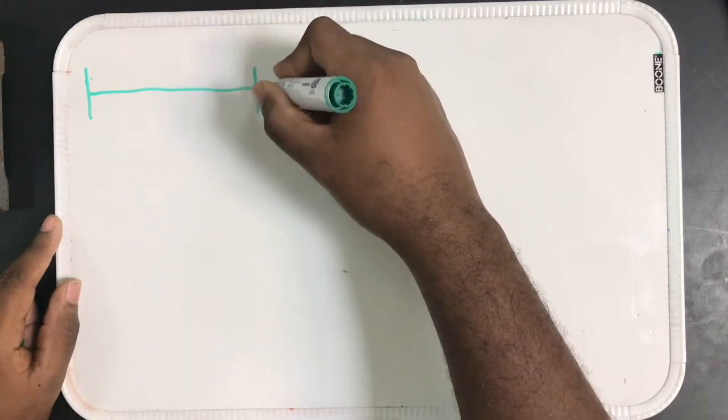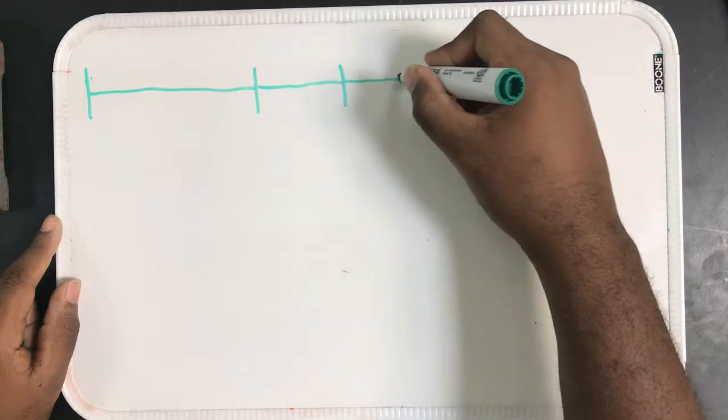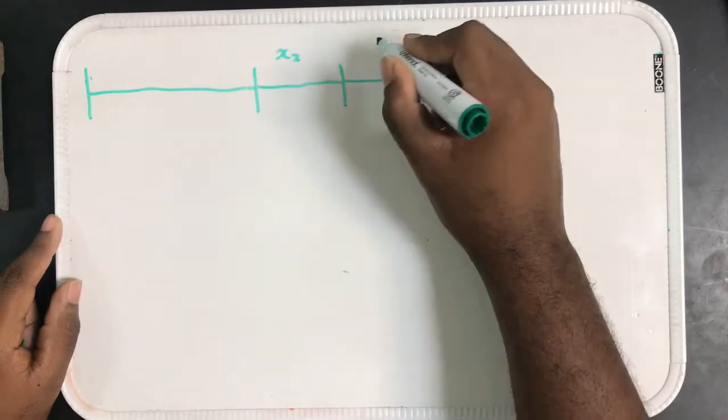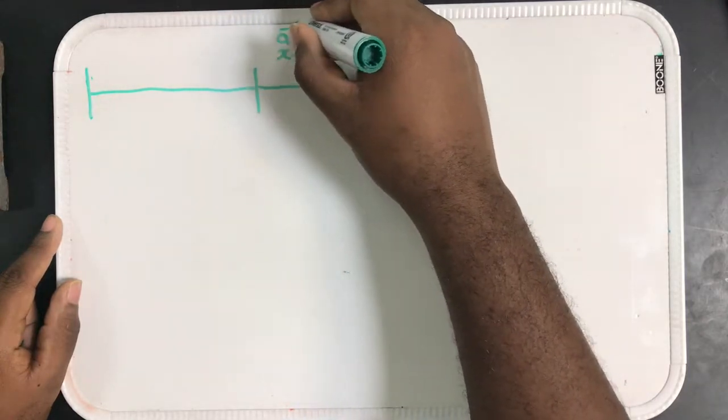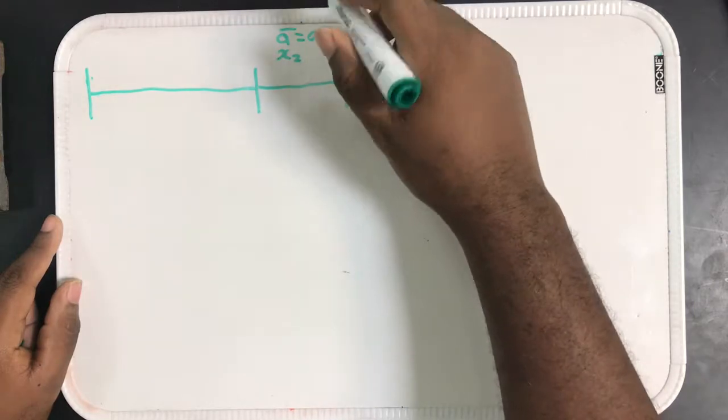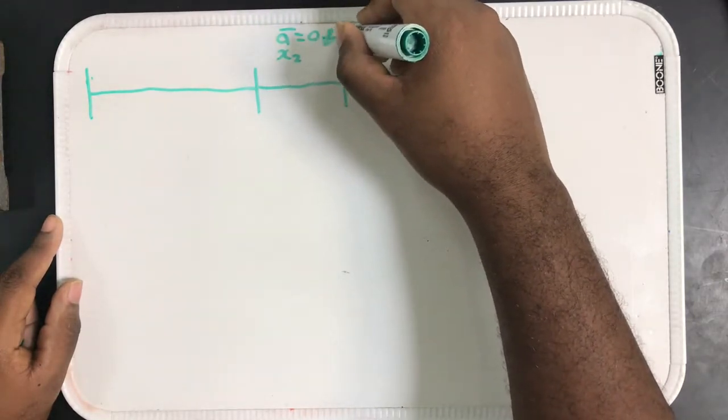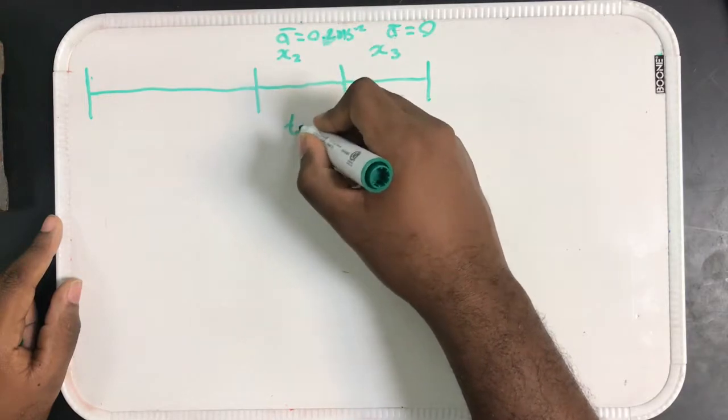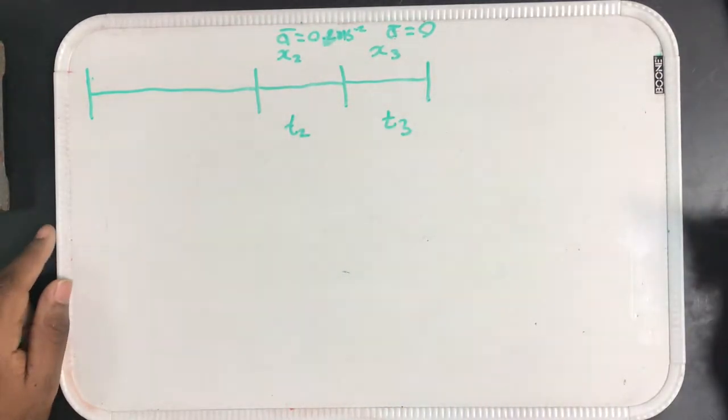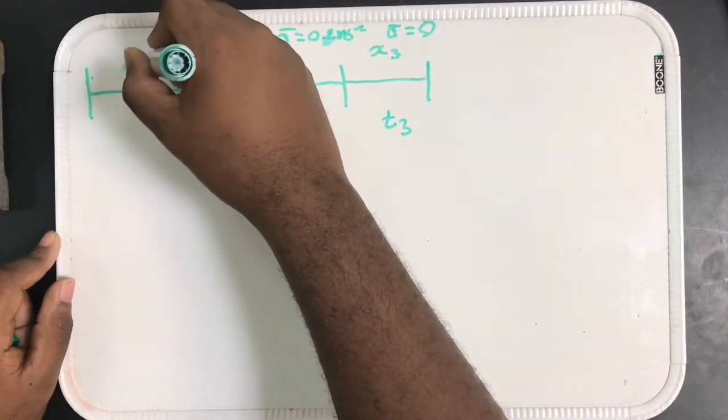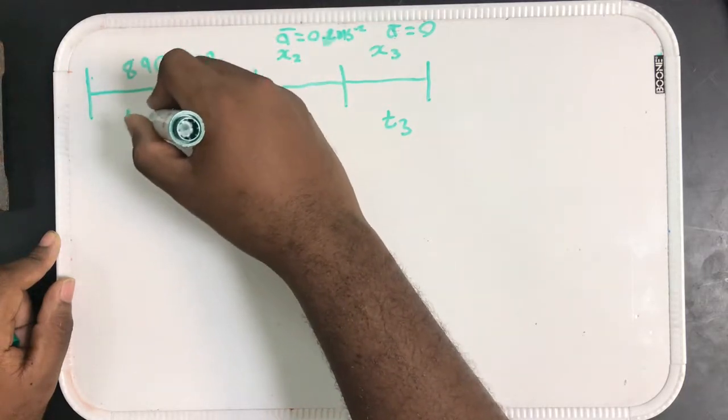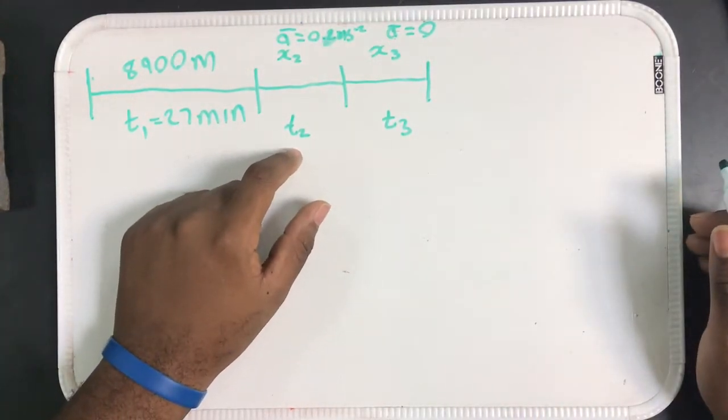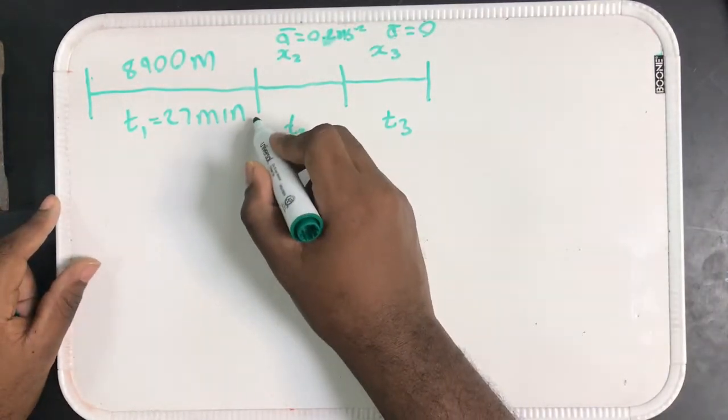Okay, so we've already done the math. I'm going to make this a little wide just so everything fits. So this distance right here is x2, this distance right here is x3. I'll put this acceleration up here, 0.2 meters per second squared. I'll put this acceleration here, 0. This is some time t2, this is some time t3. And we know this is 8900, we know this is 27 minutes. So right now this is what we're trying to find - we're trying to find this t2.